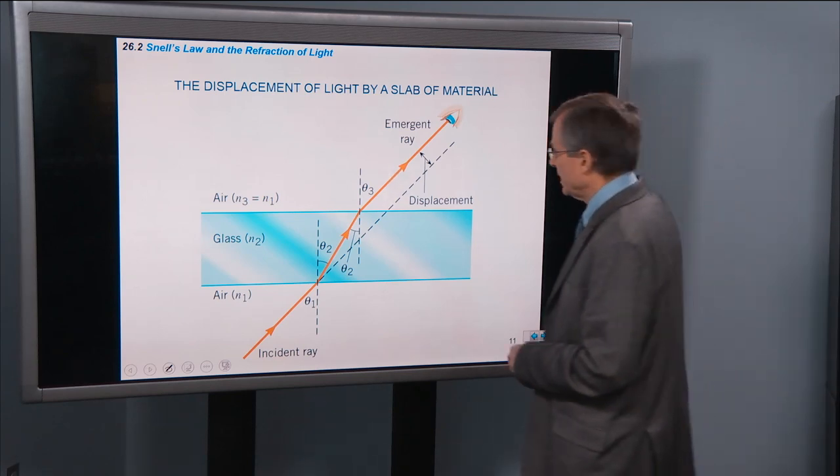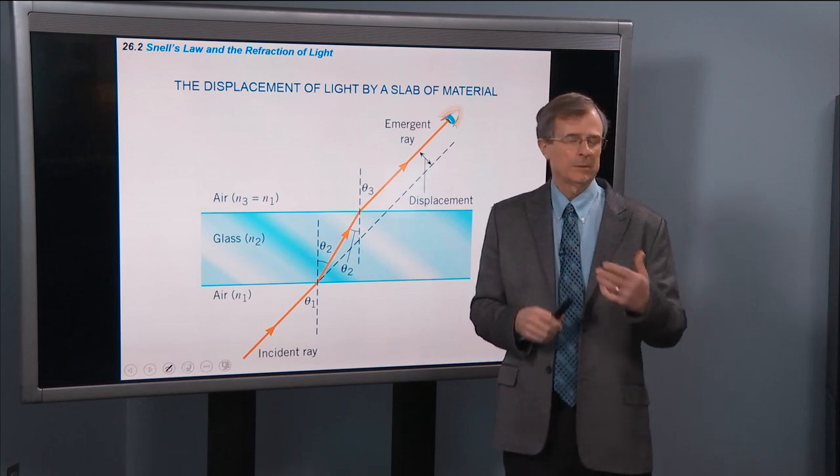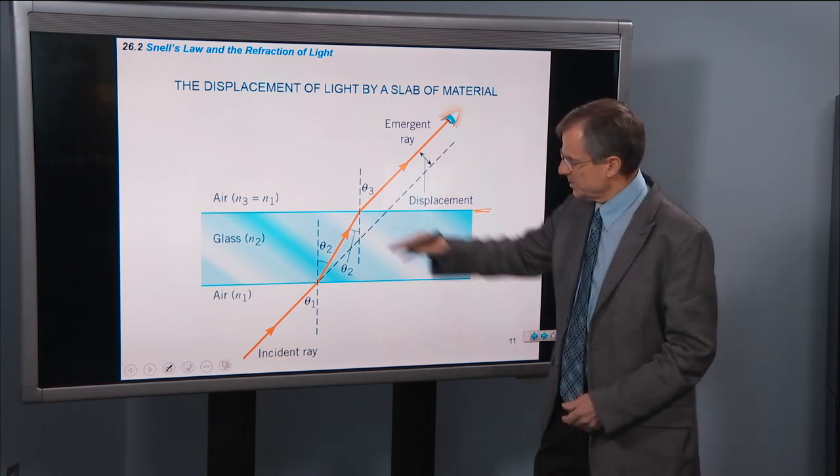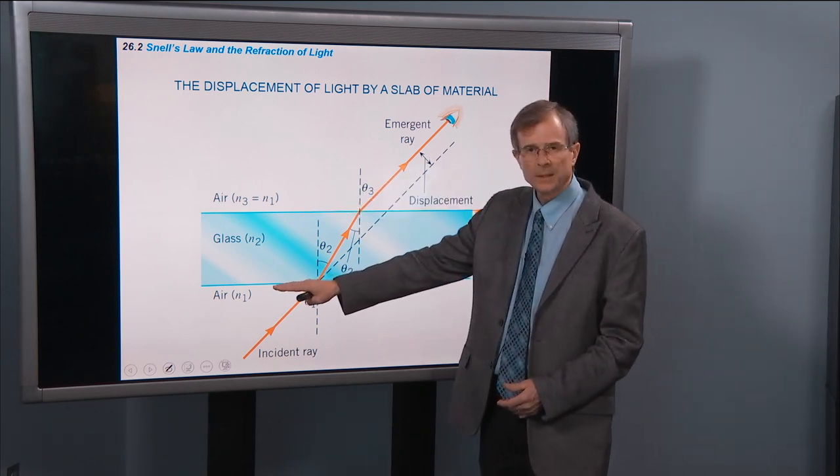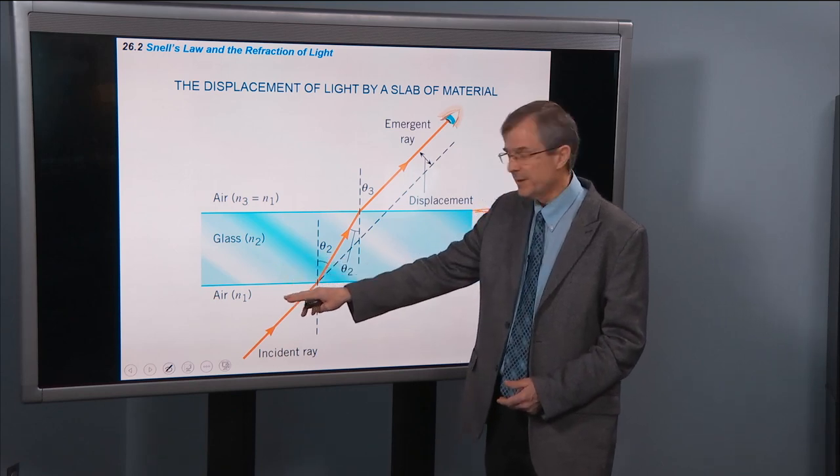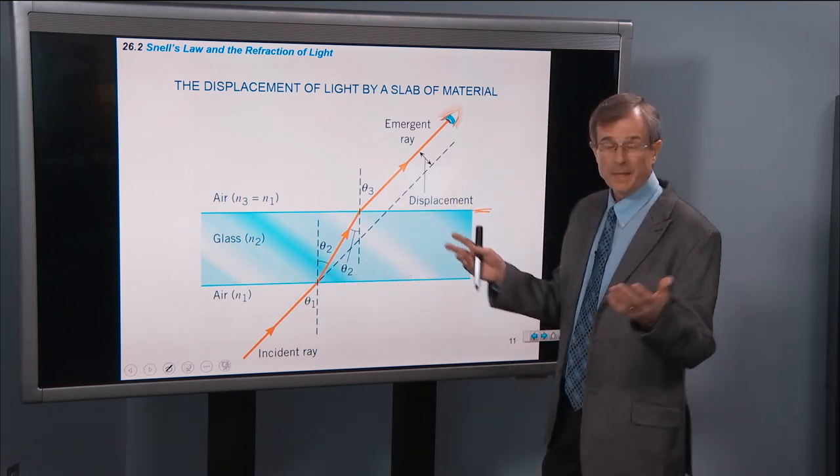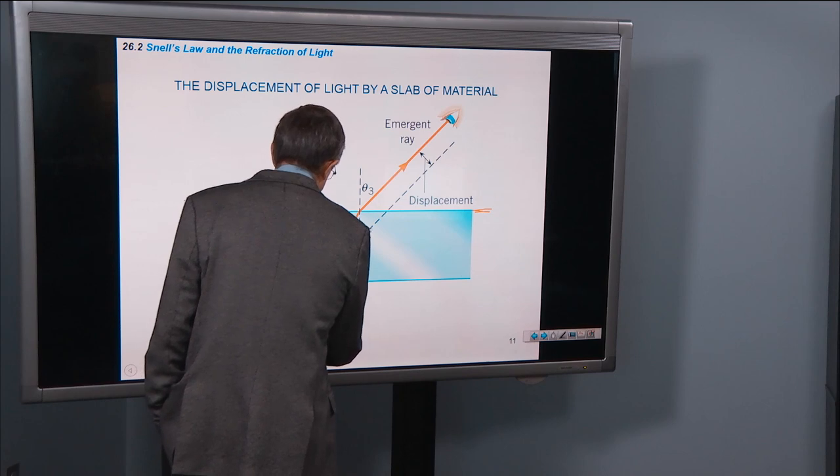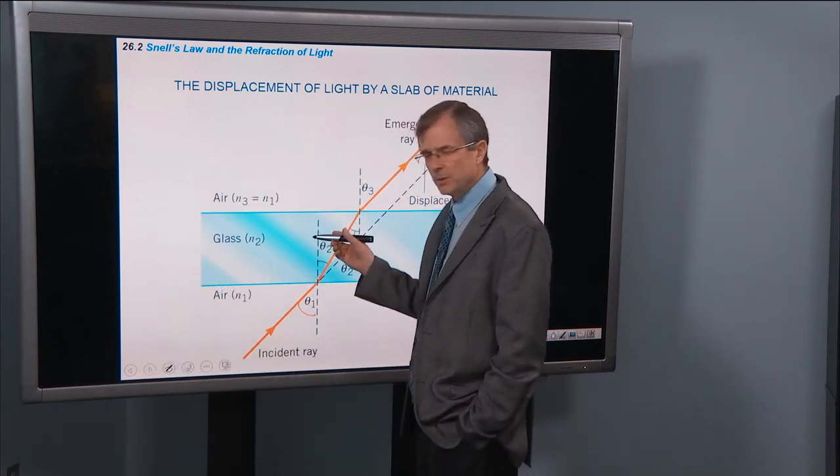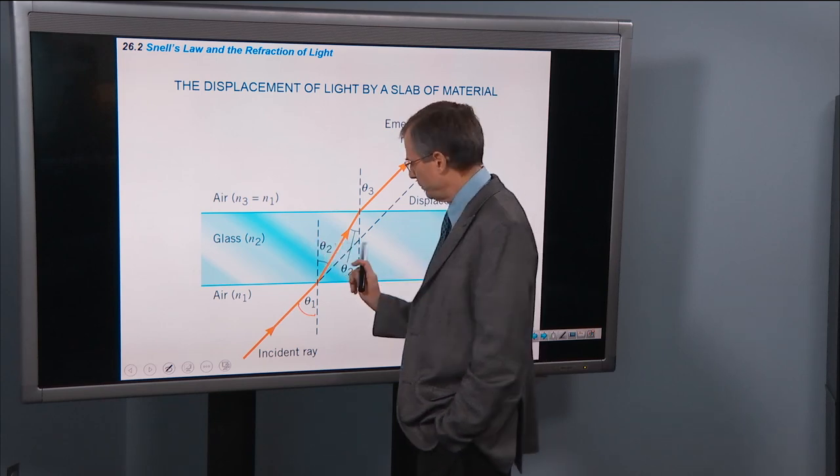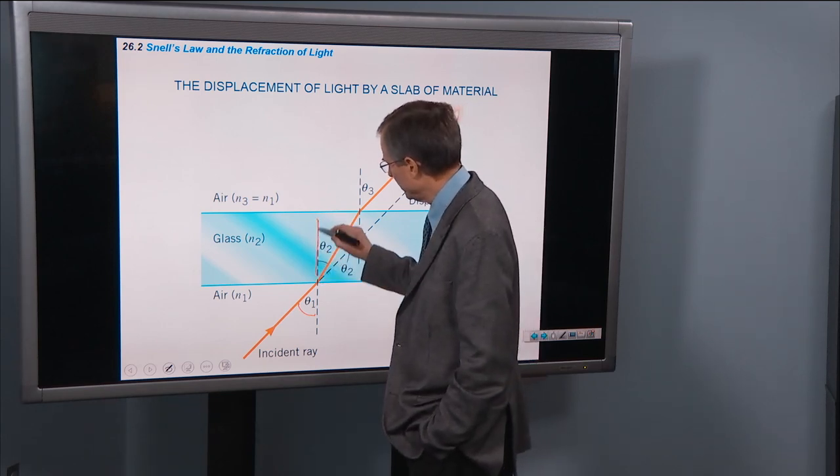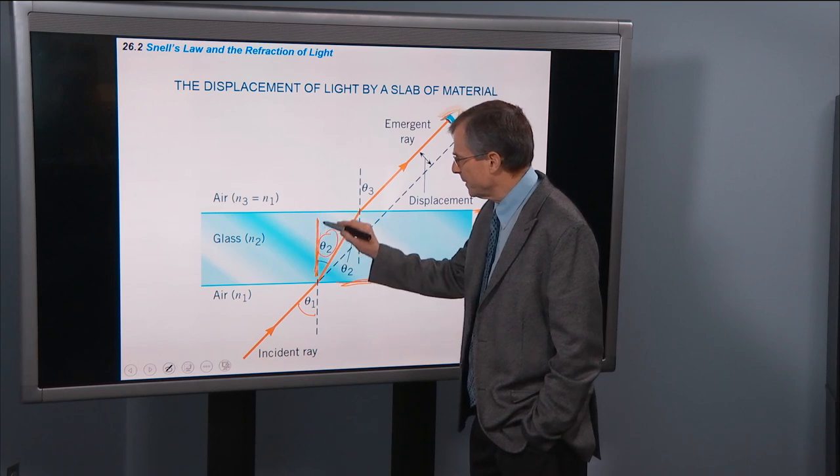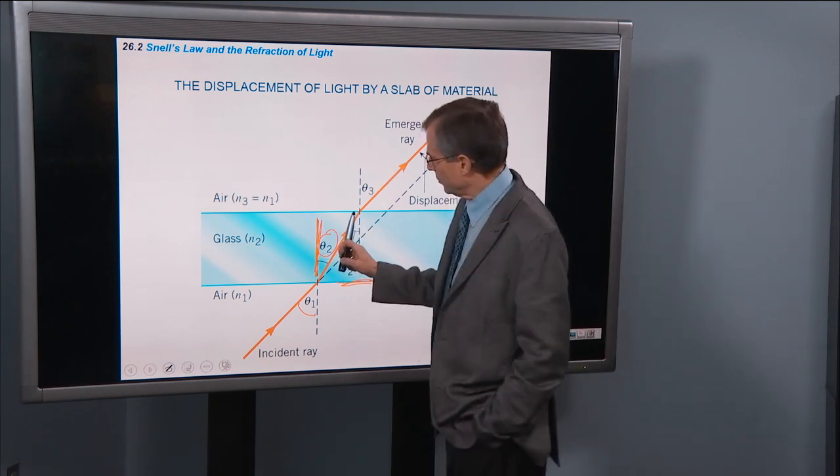The displacement of light by a slab of material. This is important when we start talking about lenses. If you have an air-glass interface right here, it's flat, and then another flat parallel interface where you've got a glass-air interface, so you're going from air to glass to air, this is like a pane of glass. What happens to the light ray? Well, the incident ray comes in at a certain angle of incidence. Since it's going into an optically more dense material, it bends toward the normal. So here's the normal direction. Remember these angles are always measured not with respect to the surface, but with respect to the normal to the surface. So it bends toward the normal.